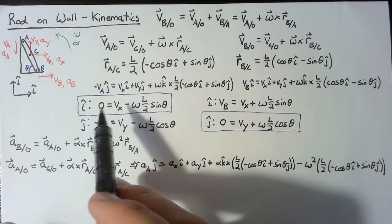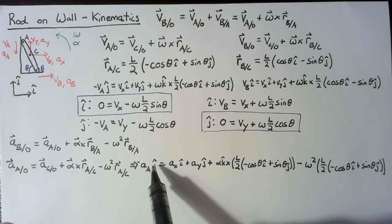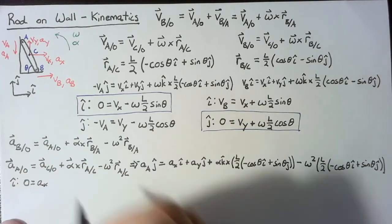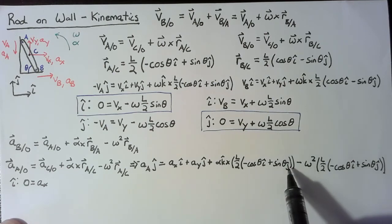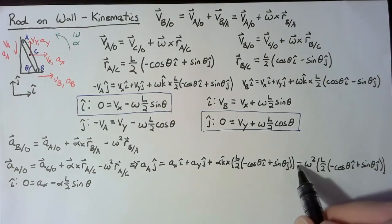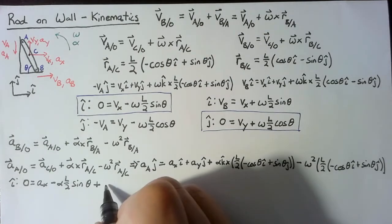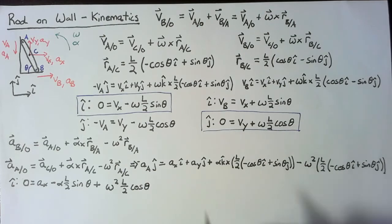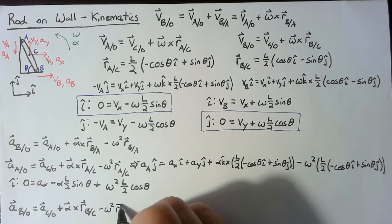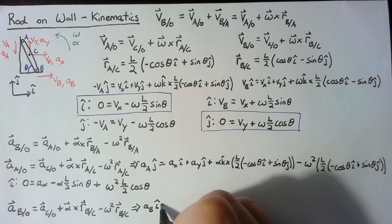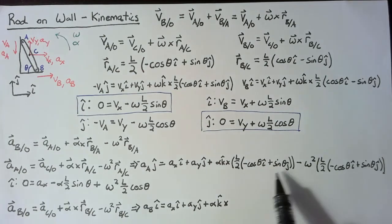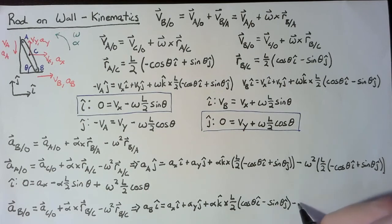For the A equation, we only care about the i part to avoid dealing with the acceleration of A. So: zero equals Ax, and since k cross j gives negative i, we get minus alpha times L over 2 times sine theta. Then we have minus a negative cosine theta, so this becomes plus omega squared times L over 2 times cosine theta. For B, the equation is the same with A substituted for B — the acceleration of B is in the i direction, the acceleration of C doesn't change, and the alpha and omega-squared terms change sign with the radius.